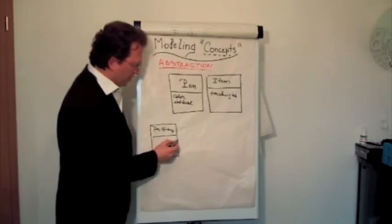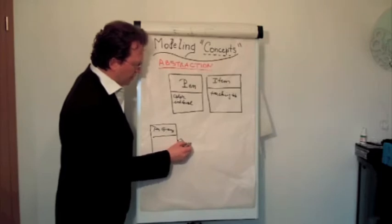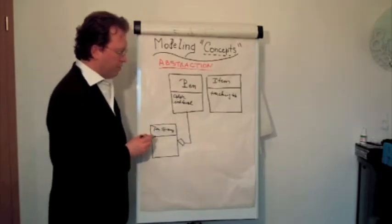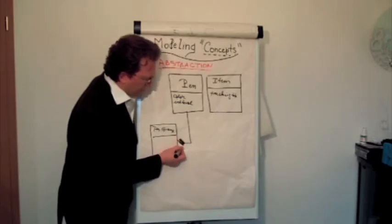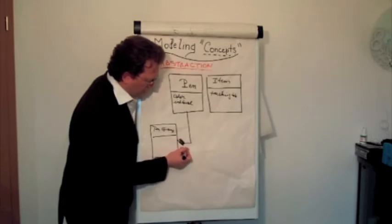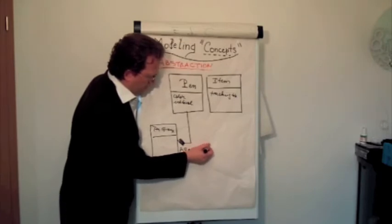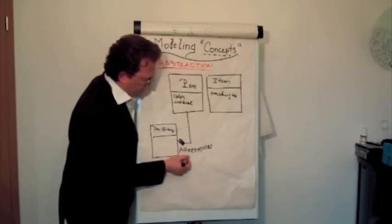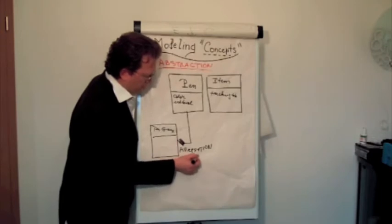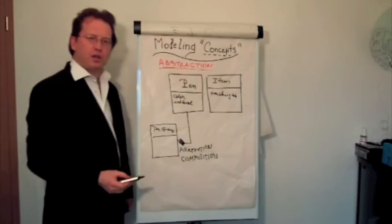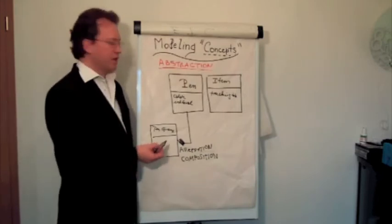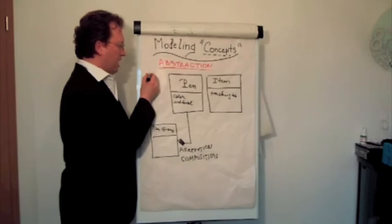Then I have another concept here. And this is the concept of grouping. And this is called what? An aggregation or a composition. Aggregation. Composition. Cool. By the way, we're doing UML without saying it.